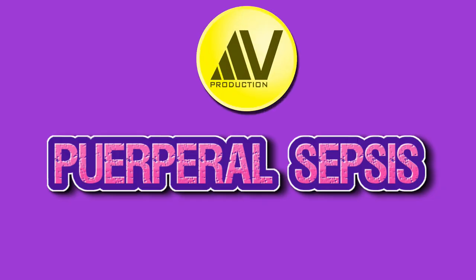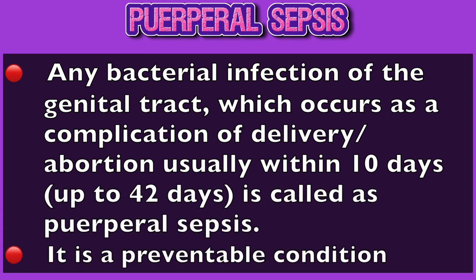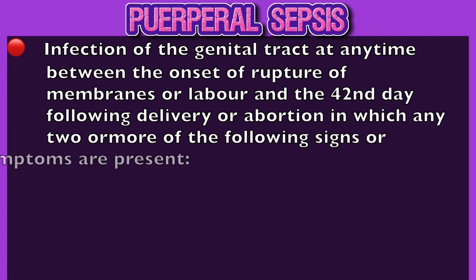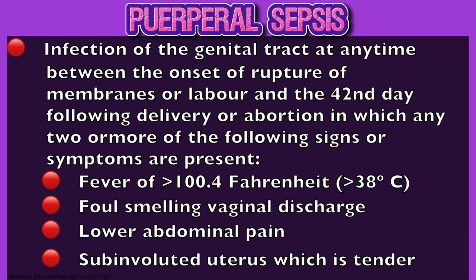I will now discuss in great detail the main topic, that is puerperal sepsis. Puerperal sepsis is defined as any bacterial infection of the genital tract which occurs as a complication of delivery or abortion, usually within 10 days up to 42 days after delivery. It can also be defined as infection of the genital tract at any time between the onset of rupture of membranes or labour and the 42nd day following delivery or abortion, in which any two or more of the following signs or symptoms are present: fever greater than 100.4 degrees Fahrenheit, that is 38 degrees Celsius; abnormal foul-smelling vaginal discharge; lower abdominal pain or sub-involuted uterus which is tender.